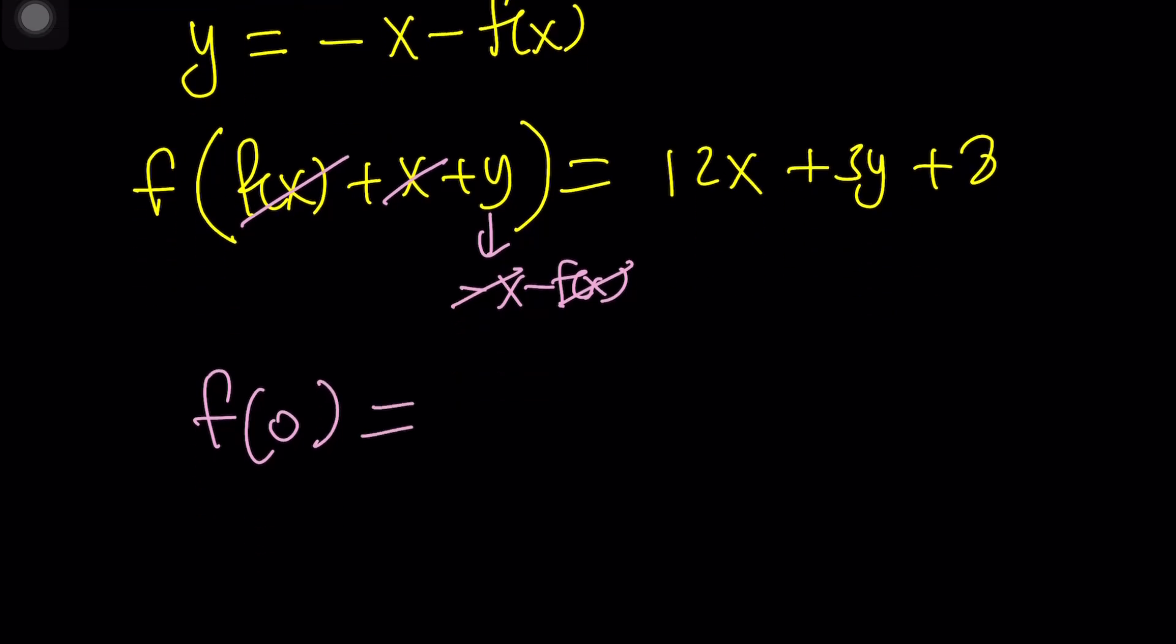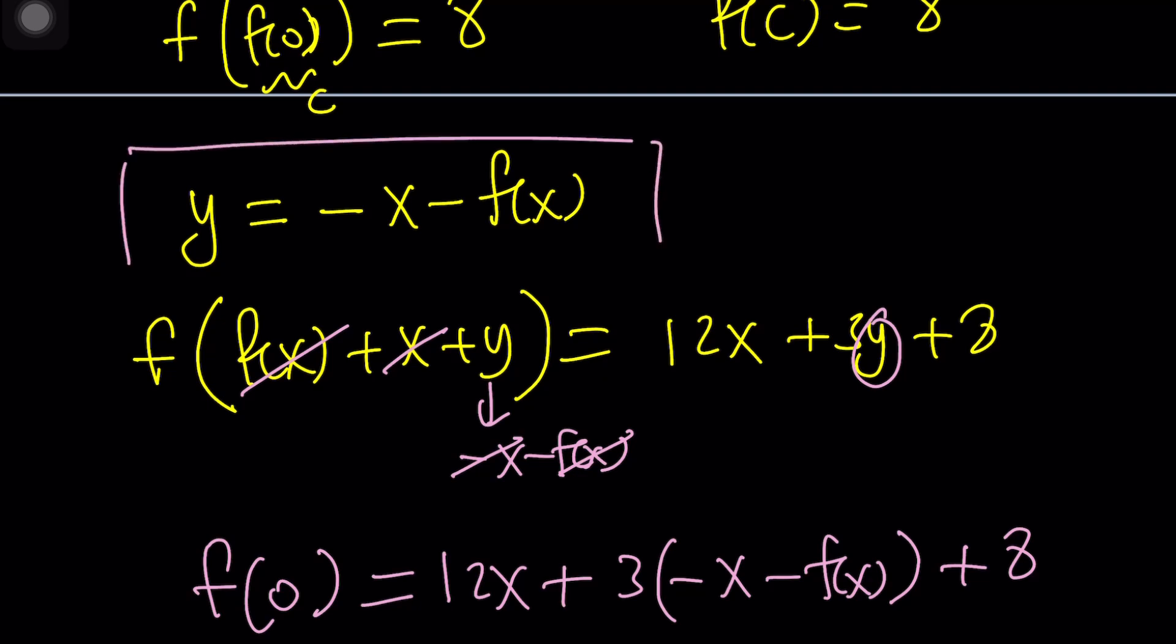On the right hand side, you need to replace y with negative x minus f of x. Let's do that. And plus 8. Of course, x is going to stay the same. You're not replacing x with anything. x is free. You're just replacing y with negative x minus f of x. Make sense?